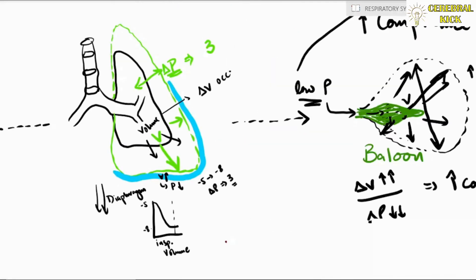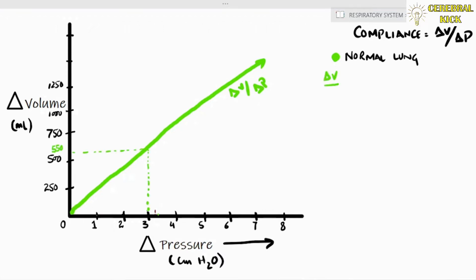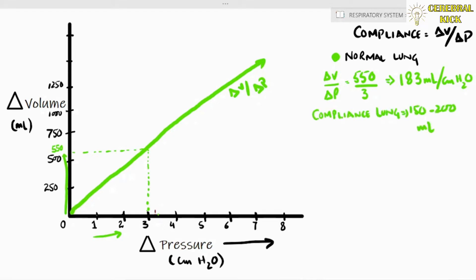If we plot this on a pressure-volume curve, the green line shows that a pressure change of 3 accommodates around 550 ml of volume. To calculate the compliance of a normal lung: 550 divided by 3 is around 183 ml per centimeter of water. Normal lung compliance is around 150 to 200 ml per centimeter of water.